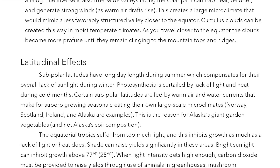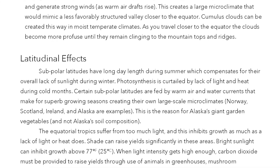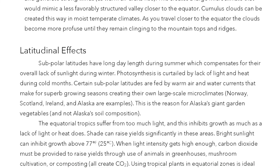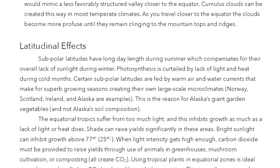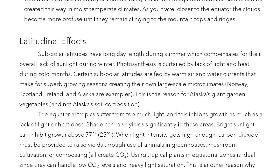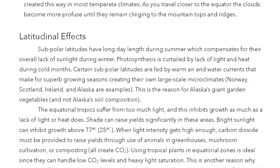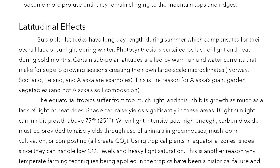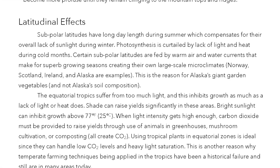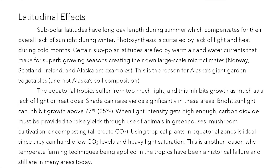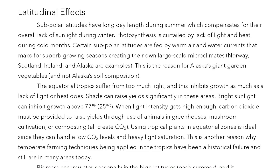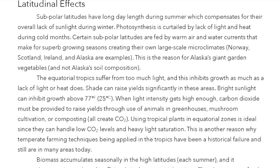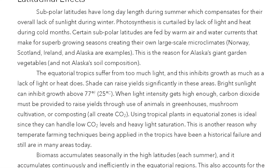Latitudinal effects. Subpolar latitudes have long day length during summer, which compensates for their overall lack of sunlight during the winter. Photosynthesis is curtailed by lack of light and heat during cold months. Certain subpolar latitudes are fed by warm air and water currents that make for superb growing seasons, creating their own large-scale microclimates. Norway, Scotland, Ireland, and Alaska are examples. This is the reason for Alaska's giant garden vegetables, not Alaska's soil composition. The equatorial tropics suffer from too much light, and this inhibits growth as much as lack of light or heat does. Shade can raise yields significantly in these areas.